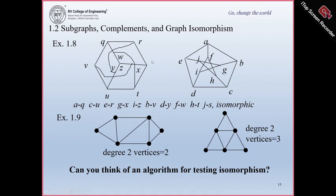Here is another example. This is one graph and this is a supposedly isomorphic graph. Can we have graph isomorphism between these two? Check: the number of vertices is 6 in both. The number of edges is 8 in the first and 9 in the second — wait, both have 9 edges. Now check the degrees: here there are two vertices of degree 2, but here there are three vertices of degree 2. So there is no possibility of an isomorphism, because isomorphism requires that the number of vertices with the same degree must be equal in both graphs.